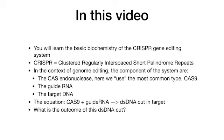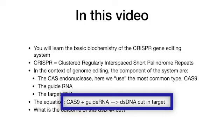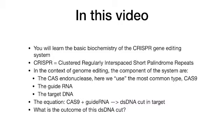From the point of view of genome editing, the CRISPR system consists of the Cas endonuclease — here we use a version called Cas9 — the guide RNA, and the target DNA. These come together as shown in the equation: Cas9 plus guide RNA equals a double-stranded DNA cut in a target of choice.